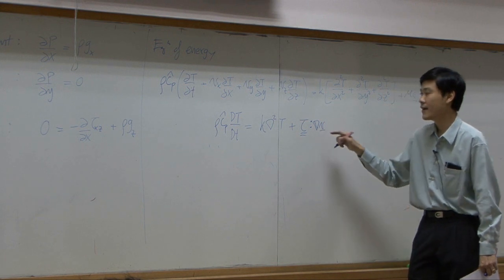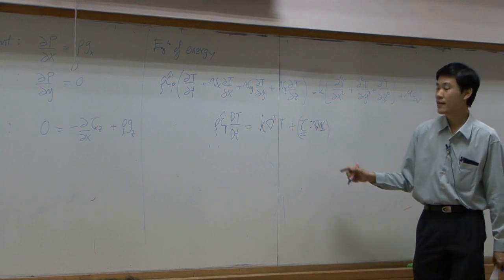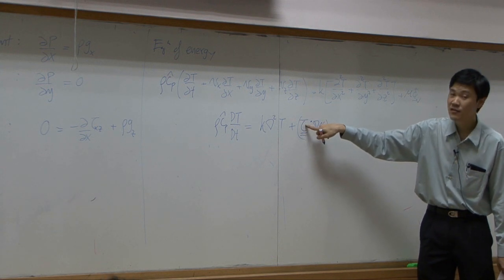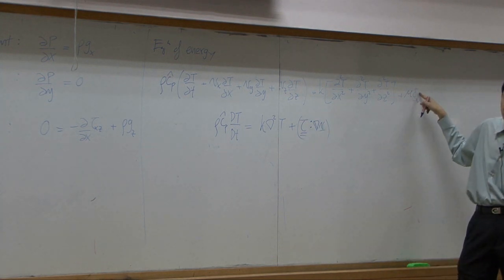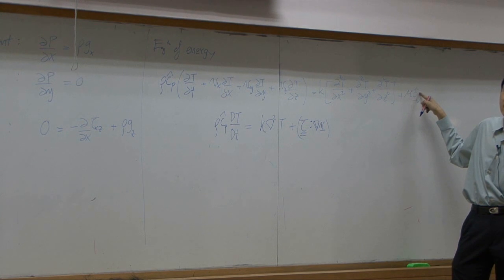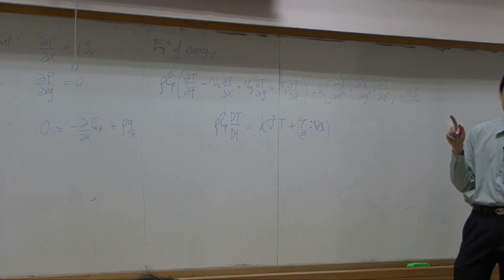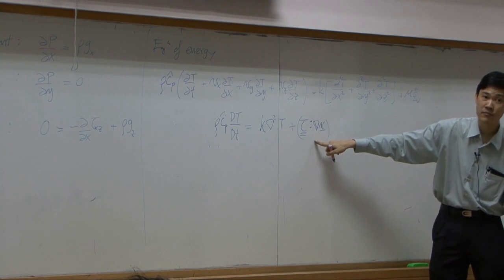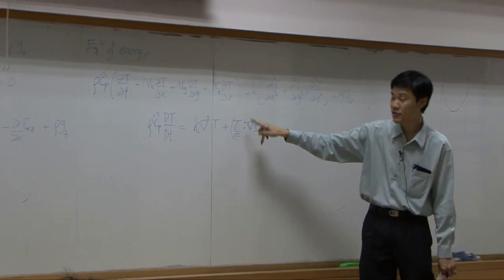We change tau here to this term using the Newtonian assumption of Newtonian fluid. If you cannot use Newtonian fluid, you need to bring this one back to original form in terms of tau, so use double dot instead.